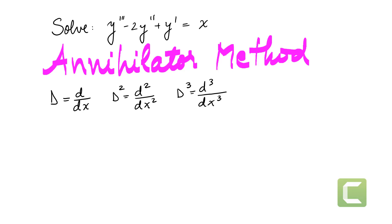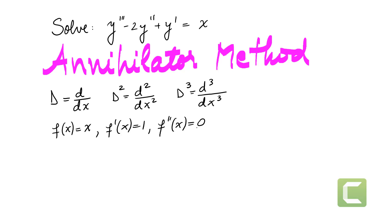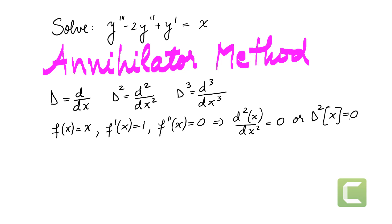We want to find out what function annihilates x — that is, what operator applied to x makes it zero. If f(x) equals x, then f prime of x is 1 and f double prime of x equals 0. So we notice that the second derivative of x with respect to x is zero, meaning D squared applied to x equals zero. D squared annihilates x. This is a good result to keep in mind.